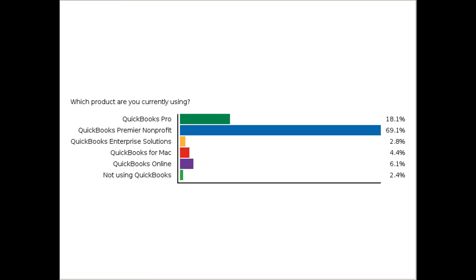QuickBooks Premier Nonprofit Edition is a desktop program that you can get through TechSoup for $50 — that's the one you should probably get. QuickBooks Pro and QuickBooks Premier Nonprofit Edition are basically the same program. Enterprise Solutions is for very large nonprofits but is basically the same program as well, so the screens are going to look identical.